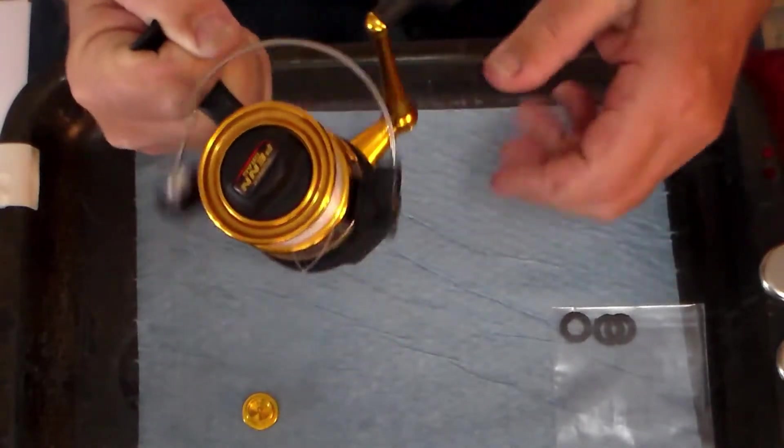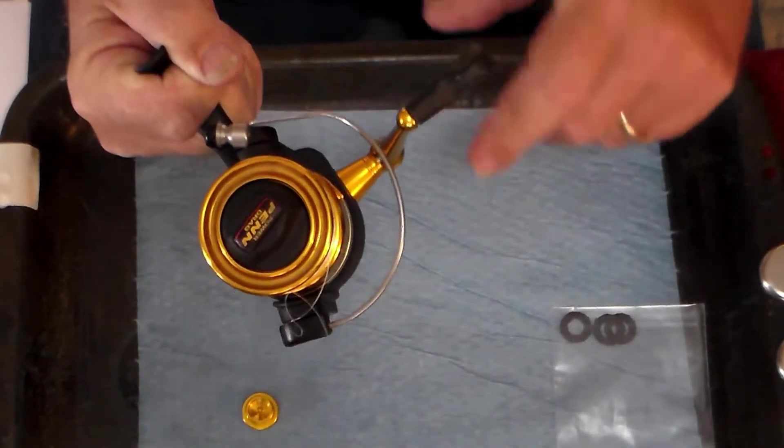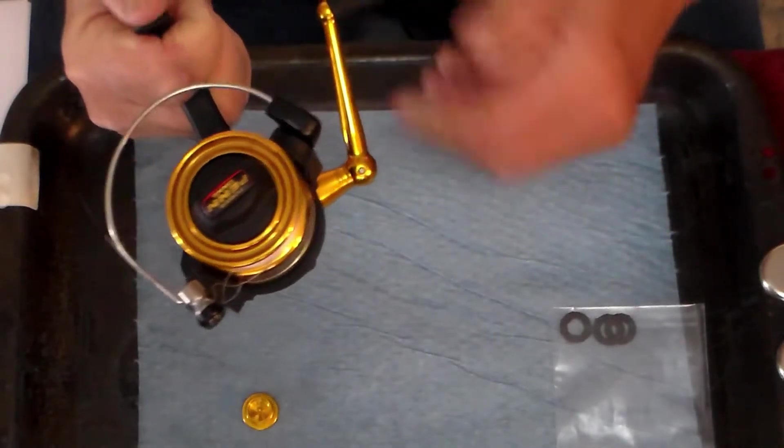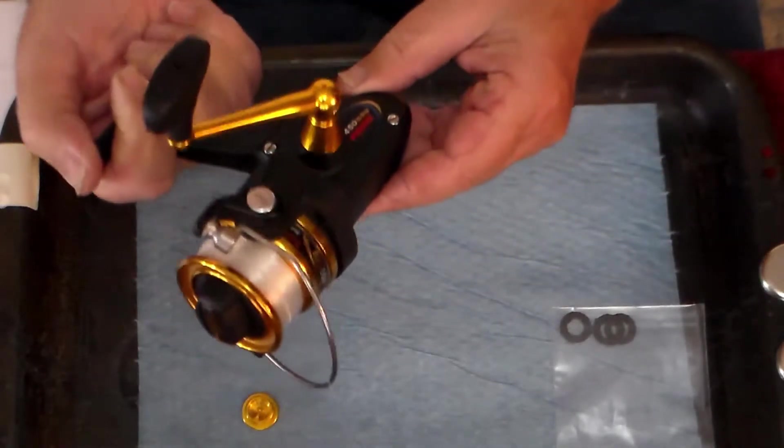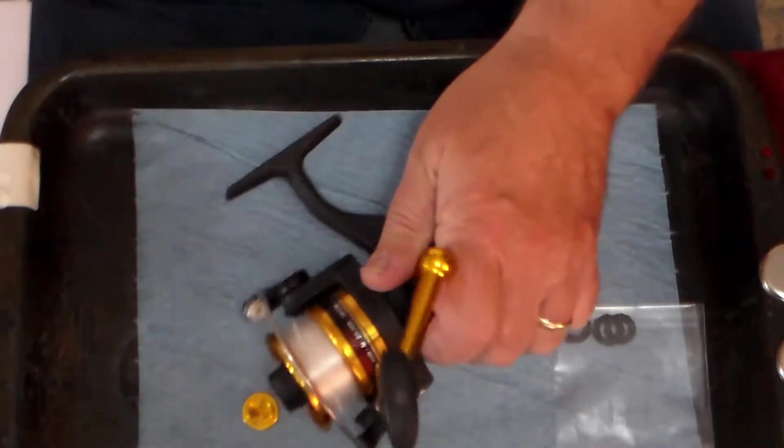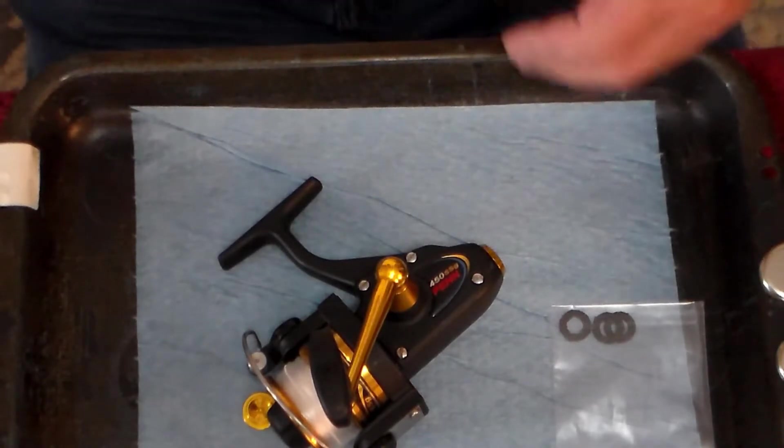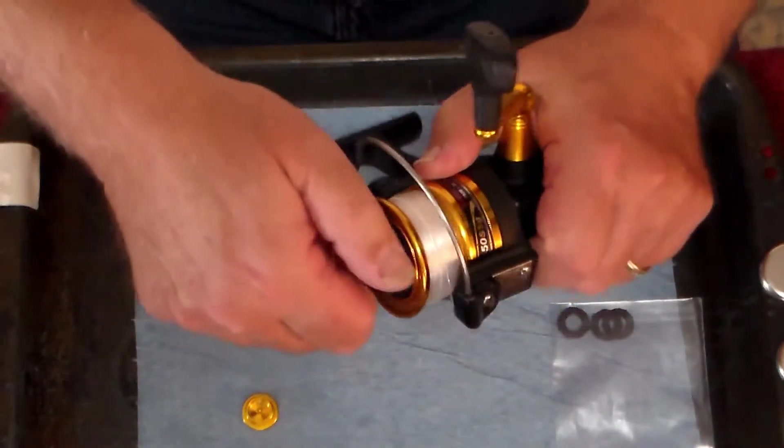And does the handle function smoothly? Yes, it does. Does the anti-reverse work? Yes, it does. It's the instant anti-reverse and it cannot be turned off. There is no on-off switch for it. We'll run that again at the end to make sure everything still functions like it should. And let's get started taking this thing apart.